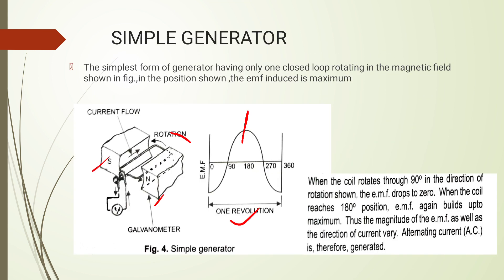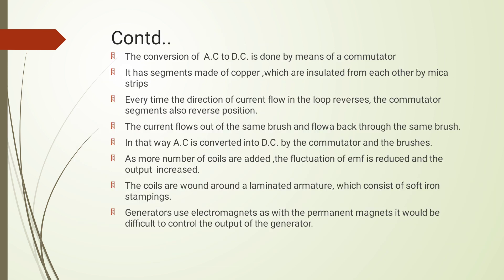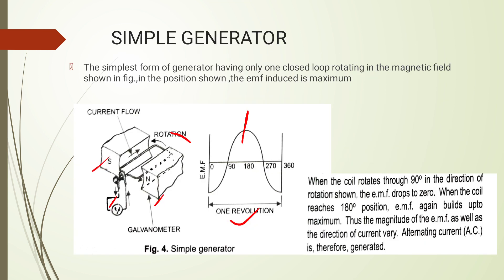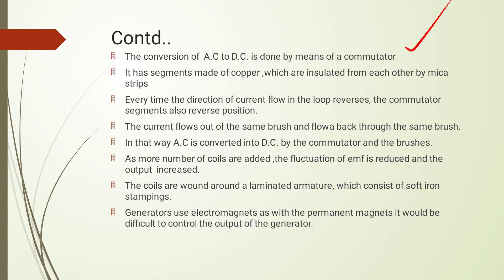We call it a commutator. The conversion of AC to DC is done by means of a commutator. Commutator segments are made of copper; every time the direction of current flow in the loop is reversed, the commutator segments also reverse position so that current flows out of the same brush. To reduce ripple, we add more number of coils wound around a laminated armature consisting of soft iron stampings.